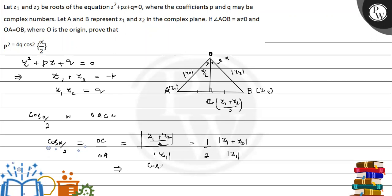we get cos²(α/2) = (1/4) |z1 + z2|² / |z1|². Now |z1 + z2|² is equal to p².